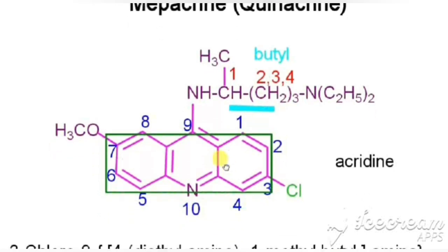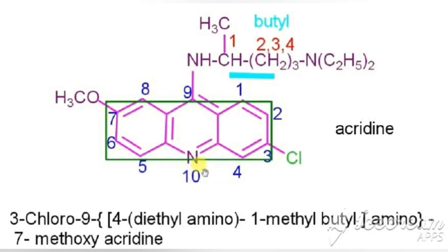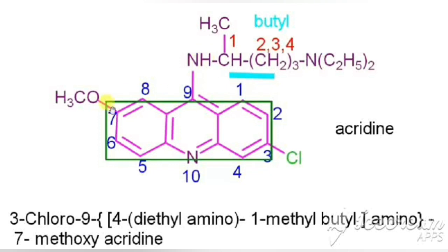For the chemical name of mepacrine, acridine is chosen as the parent. The 3rd position has chlorine — 3-chloro. At the 9th position, open bracket: the 4th carbon is connected with diethylamino — 4-diethylamino, 1-methyl butyl amino, close bracket. 7th position has methoxy. The chemical name is: 3-chloro-9-(4-diethylamino-1-methylbutylamino)-7-methoxyacridine.